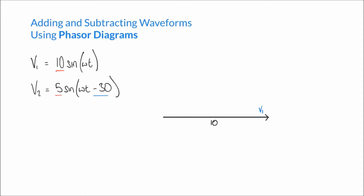Here's my first vector or phasor for V1. Because V1 has an amplitude of 10, I've reflected that in the diagram by giving the vector a length of 10. Secondly, V1 doesn't have a phase shift — either positive or negative — and so by default V1 sits on the horizontal.